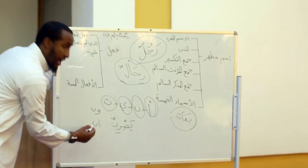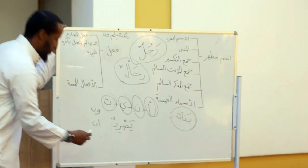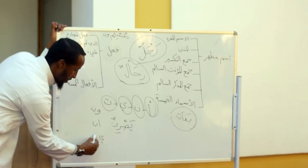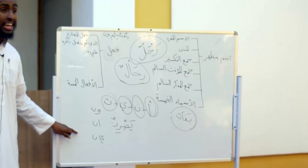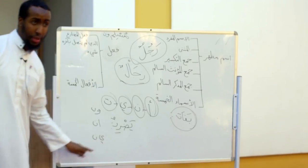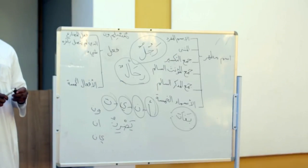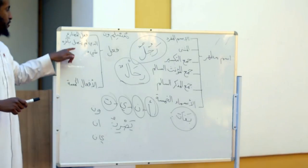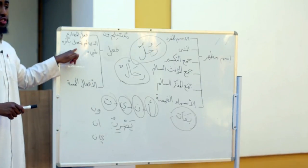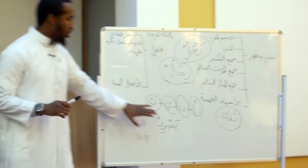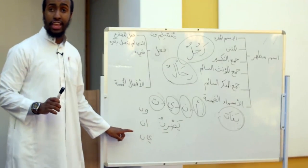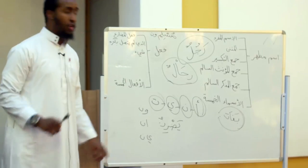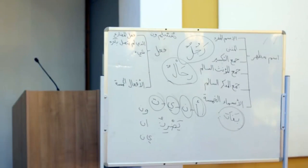It is because it's saved from three things entering it: Waw al-Jama'ah, alif al-ithnain, and ya'u al-Mu'anathat al-Mukhataba. So if it becomes yadribuuna, or yadribani, or tadribina — what happens? It's no longer referred to as al-Fi'l al-Mudari' al-ladhi lam yatasil bi-akhirihi shay. As long as there's no alif-nun, waw-nun, or ya-nun at the ending — that's the condition.